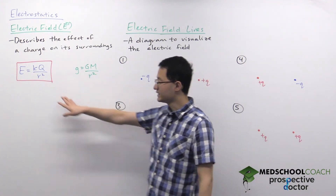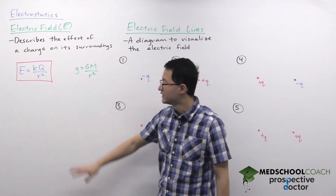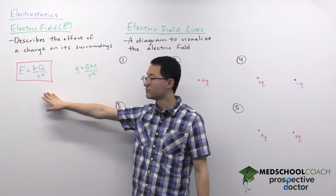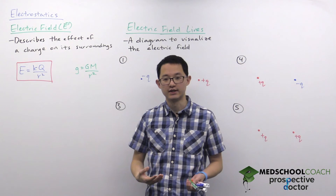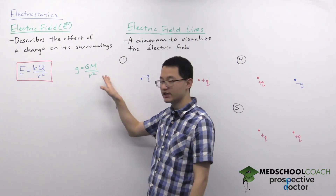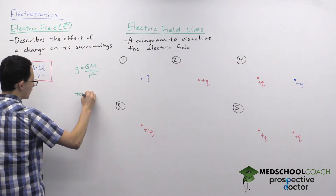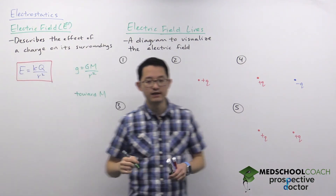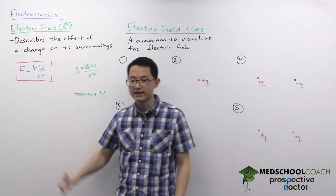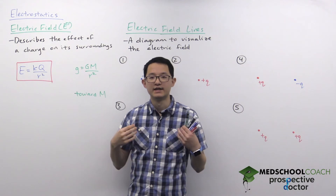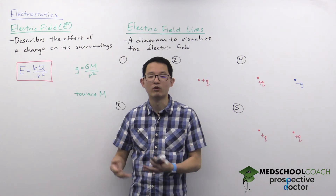These equations use variables we've seen before: Coulomb's constant, charge, and radius squared. These equations allow us to calculate the magnitudes of the electric field and the gravitational field, but they don't tell us the direction. For gravitational field, the direction is straightforward — it is always toward the mass exerting the gravitational field, in our case the earth. For the electric field it's more complicated because whereas mass is always positive, charge can be positive or negative.